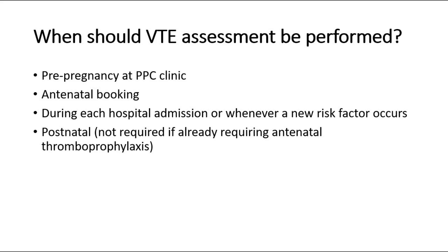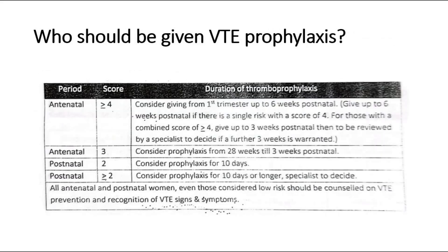For antenatal score 4 or more, consider giving thromboprophylaxis from the first trimester up to six weeks postnatal. For antenatal score 3, consider starting from 28 weeks until three weeks postnatal. For postnatal risk score 2, consider prophylaxis for 10 days. For postnatal score more than 2, a specialist should decide whether to give for 10 days or longer.